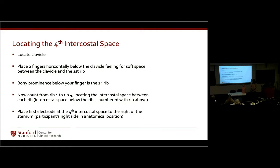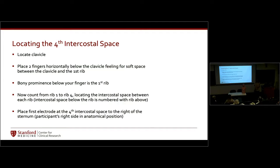The next lead is V4 — we skip V3 for now. V1 and V2 are the same for women. Where it gets different is around the chest area, which is why we want patients at a 45-degree angle — the breast tissue moves out of the way a little. For women, you may have to lift that tissue and place the lead under it. You do not want to place any leads on breast tissue.